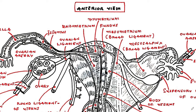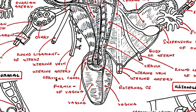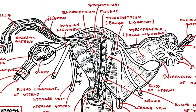The ovaries produce the ova, also known as the eggs. The external sex organs are also known as the genitals, and these are the organs of the vulva, which include the labia, the clitoris, and the vaginal opening. The vagina is connected to the uterus at the cervix. The uterus and the uterine tubes are covered by the fold of the broad ligament. The uterine tubes are lateral extensions of the uterus, suspended in the part of the broad ligament known as the mesosalpinx.